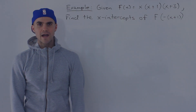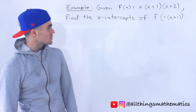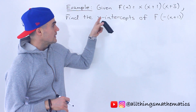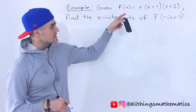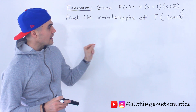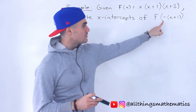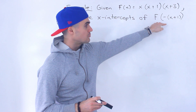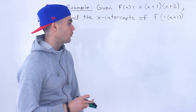What's up everyone, welcome back. Patrick here. Moving on to the next question — this one's pretty unique, pretty cool. So given f of x equals x times x plus 1 times x plus 3, we have to find the x-intercepts of the corresponding function f of negative bracket x plus 1.